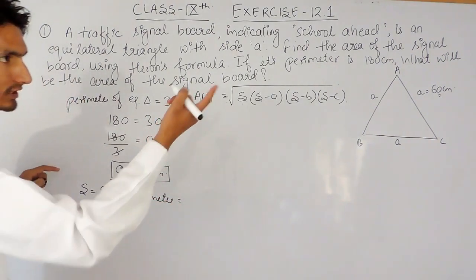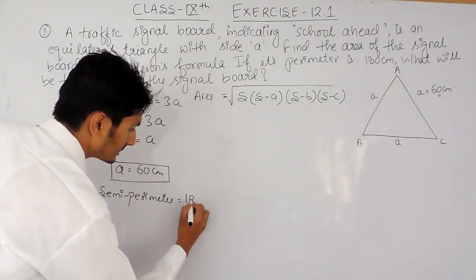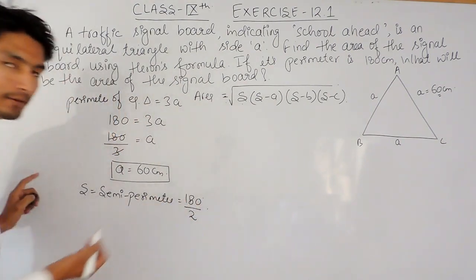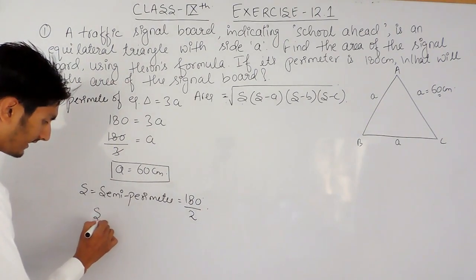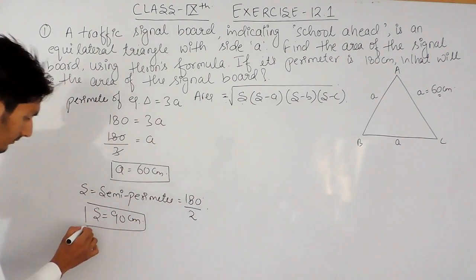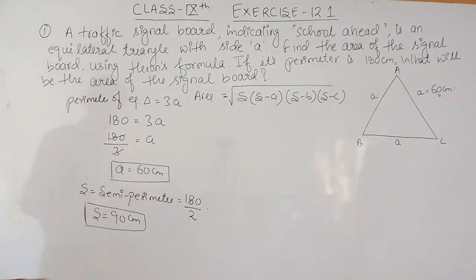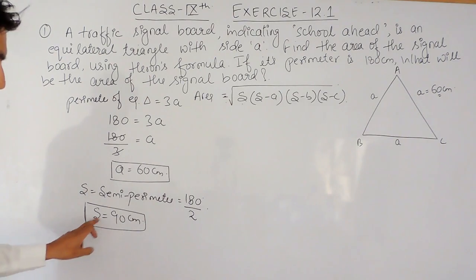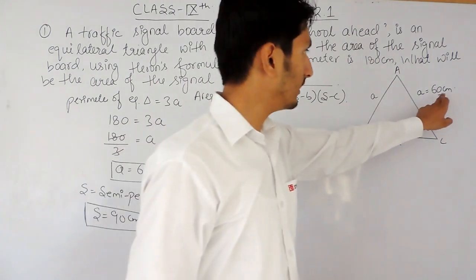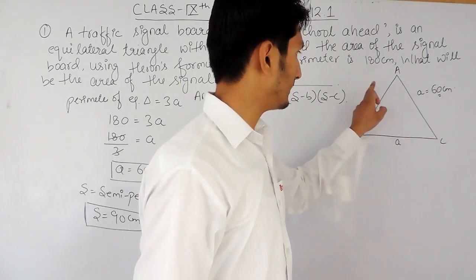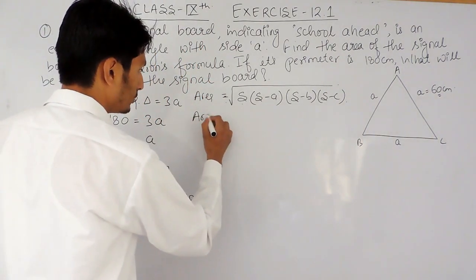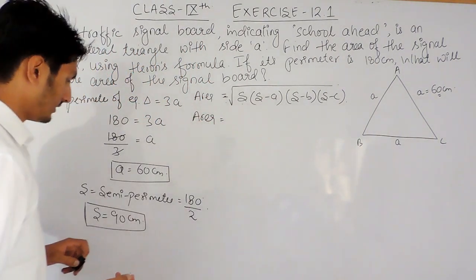The complete perimeter for this triangle is 180 cm, so the semi-perimeter will be half of that. S = 90 cm. The three sides A, B, C are 60 cm, 60 cm, and 60 cm each.